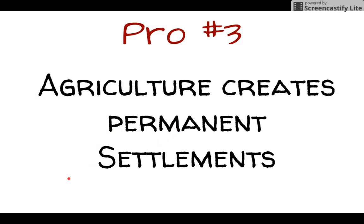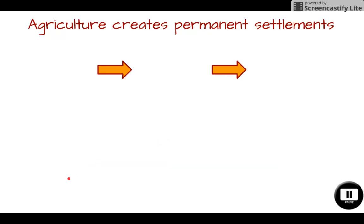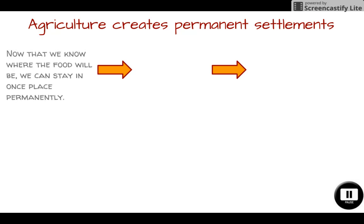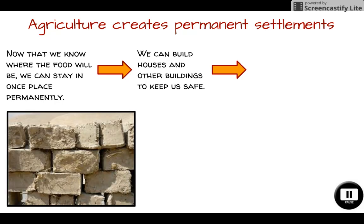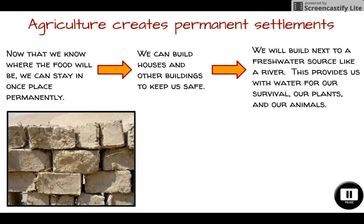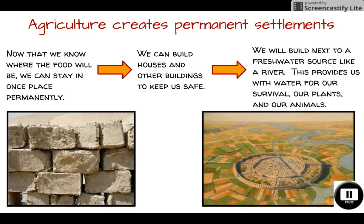Pro number three: agriculture creates permanent settlements. Now that we have agriculture, we can form permanent locations and stay in one place since we know where the food will be. We can build items that keep us safe from the elements and potential predators. The first real building blocks on this planet were mud bricks in Mesopotamia — literally shaped out of mud. We'll also build settlements near freshwater for crops and survival, and we'll see cities develop with canals running through nearby rivers.